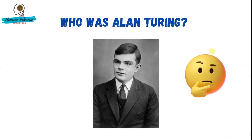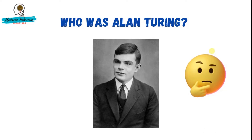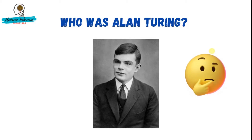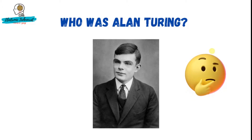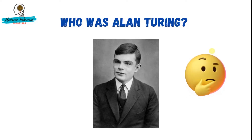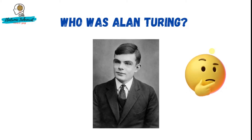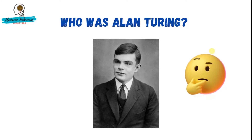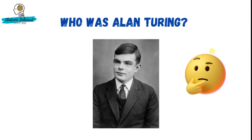Welcome back again. First of all, we will start by knowing who was Alan Turing. Alan Turing, or Alan Matheson Turing, is considered to be the father of theoretical computer science and artificial intelligence. He was also an English mathematician, computer scientist, logician, cryptanalyst, philosopher and theoretical biologist. He was highly influential in the development of theoretical computer science, providing a formalization of the concepts of algorithm and computation with the Turing machine, which can be considered a model of a general purpose computer.